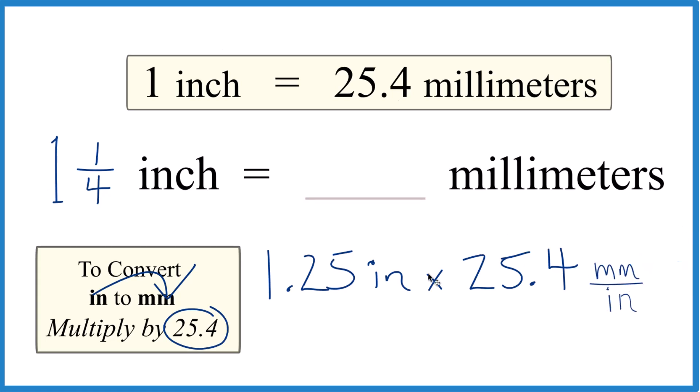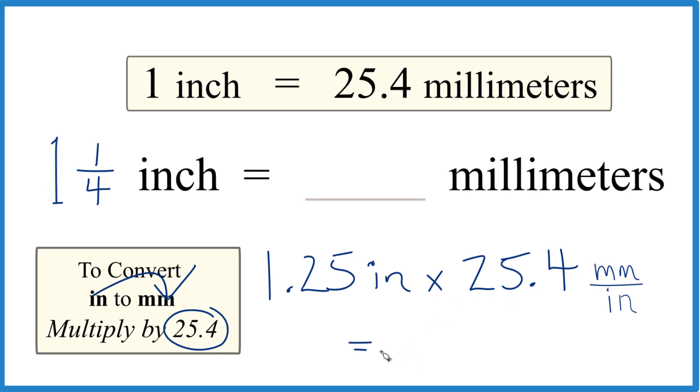So we multiply 1.25 times 25.4, we end up with 31.75, let's call it 31.8 here. And because inches on top and the bottom cancel out, those are going to be our millimeters.